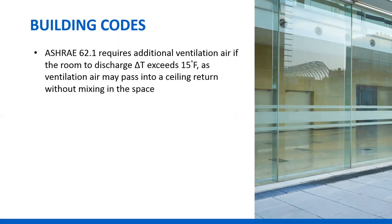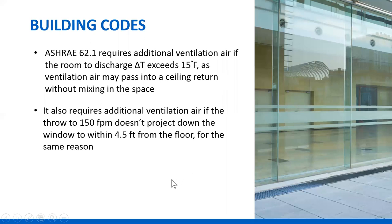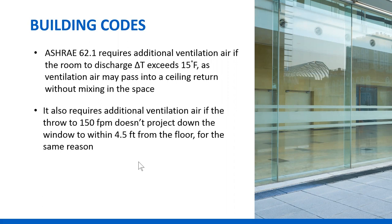If the room is 73 degrees, the ideal winter setting, that means the discharge temperature needs to be 88 degrees or less to avoid the 20% ventilation penalty. In addition, you want to get the 150 feet-per-minute throw to make it to within four and a half feet of the floor. These are both requirements in the ventilation rate procedure of ASHRAE 62.1, which is code in almost every municipality — probably everywhere in North America. This is a code requirement that a lot of people are not really aware of.